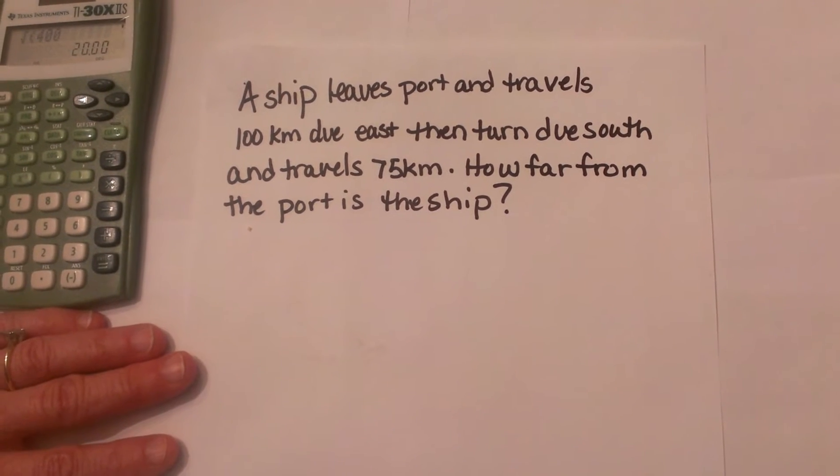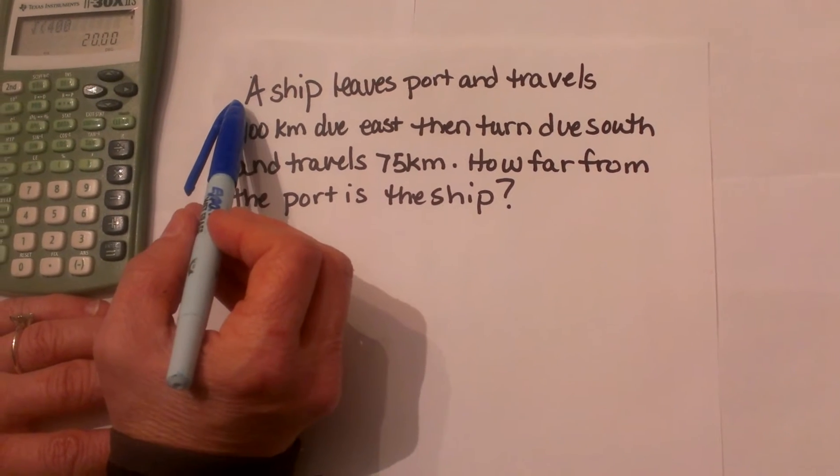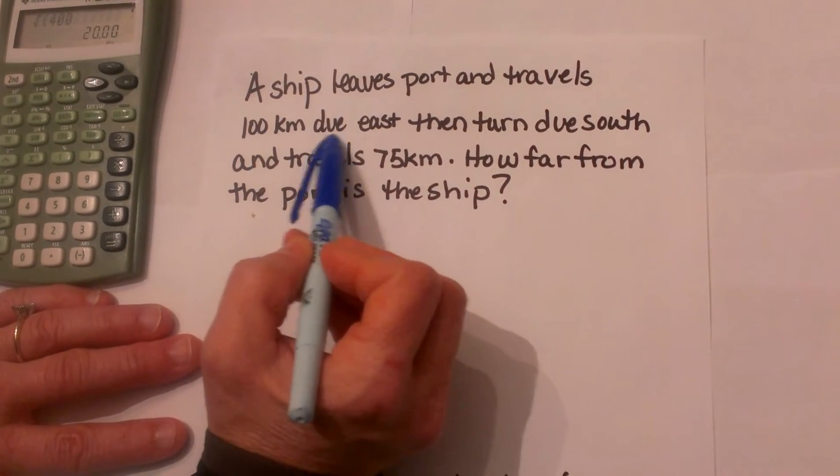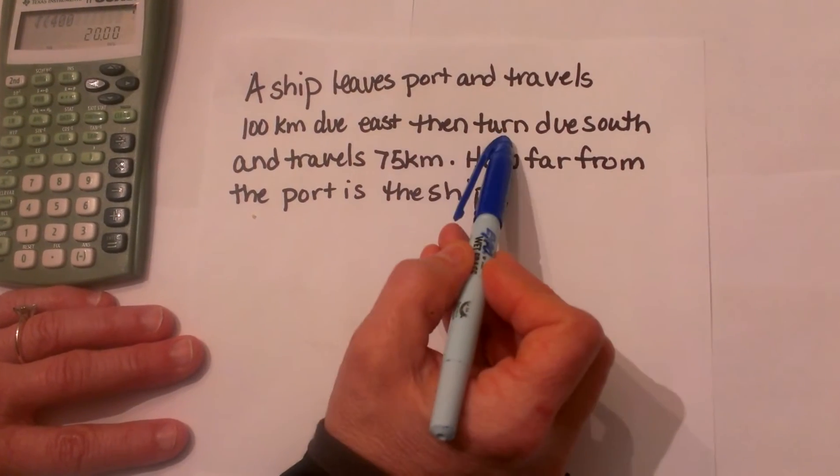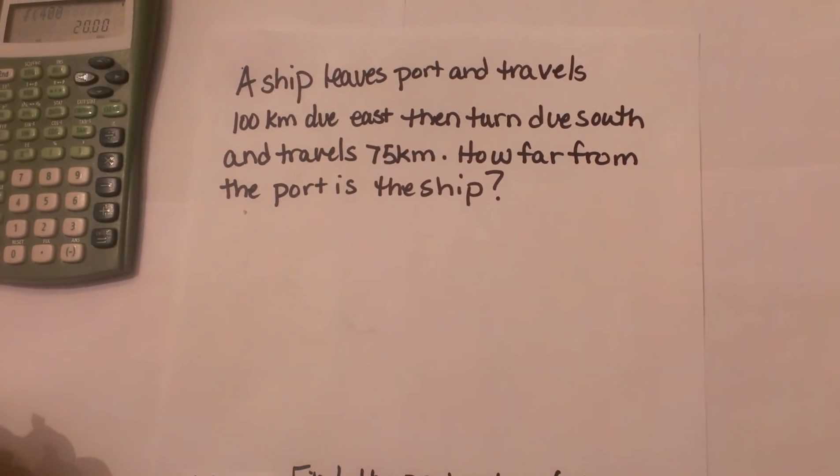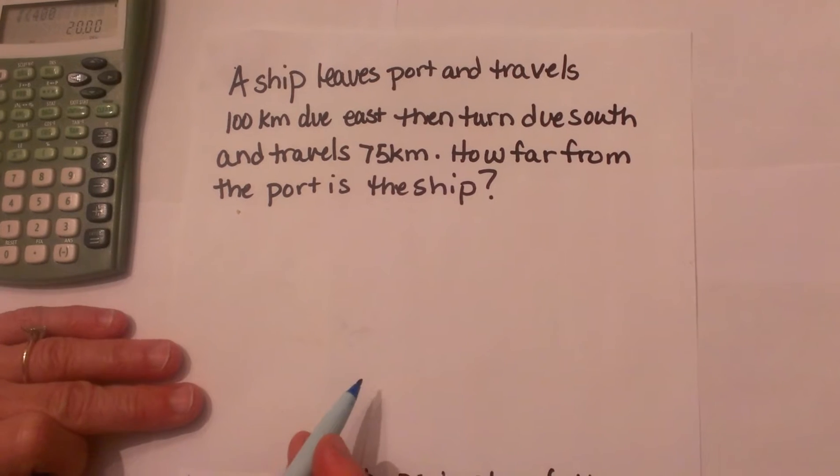We are working on word problems with the Pythagorean Theorem. This one is: a ship leaves port and travels 100 kilometers due east, then turns due south and travels 75 kilometers. How far from port is the ship?